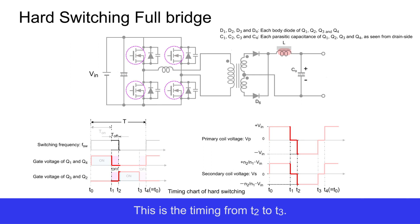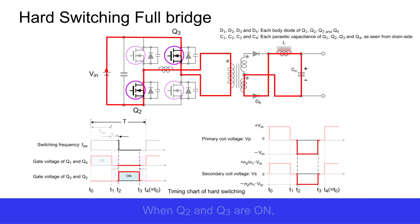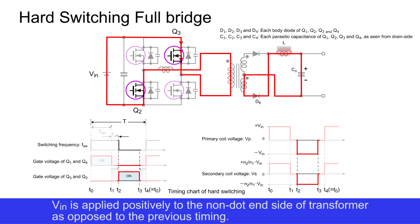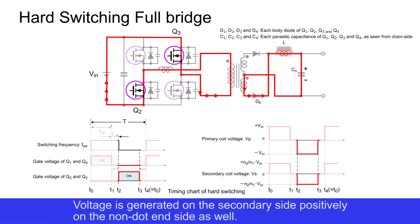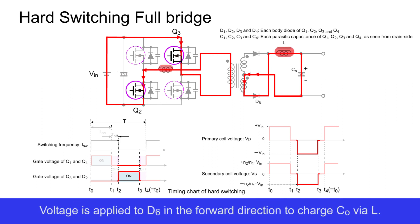This is the timing from T2 to T3. Q2 and Q3 are turned on. When Q2 and Q3 are on, VIN is applied positively to the non-dot end side of the transformer, as opposed to the previous timing. Voltage is generated on the secondary side positively on the non-dot end side as well. Voltage is applied to D6 in the forward direction to charge CO via L.